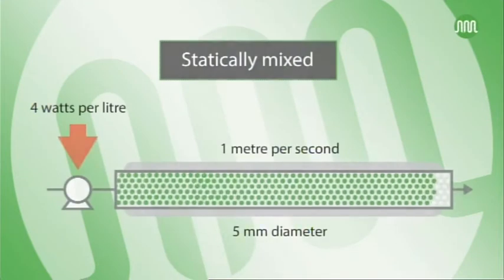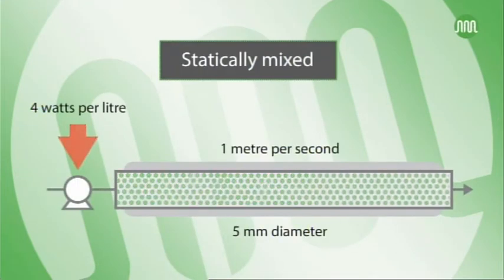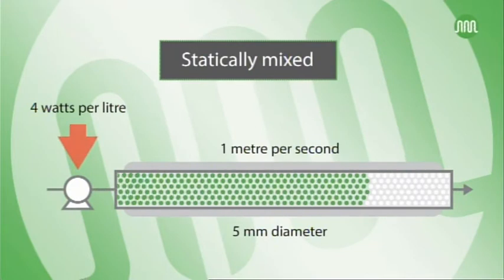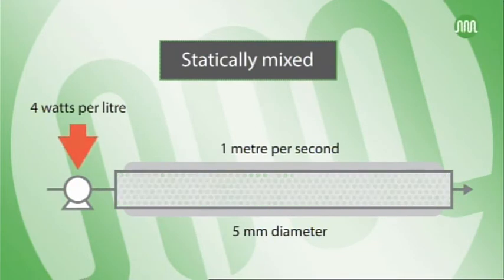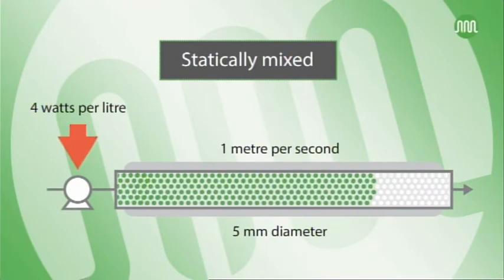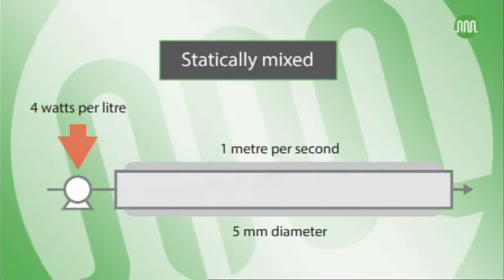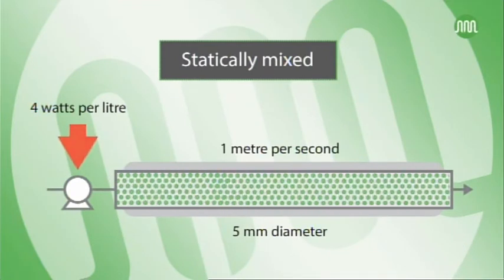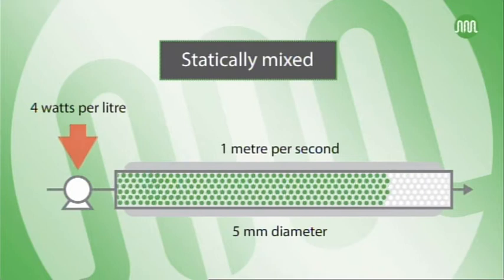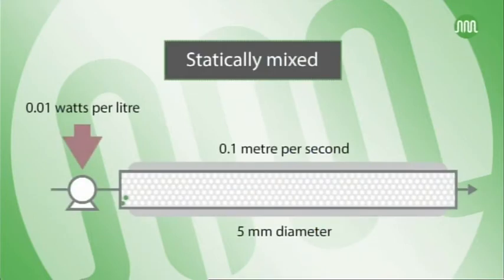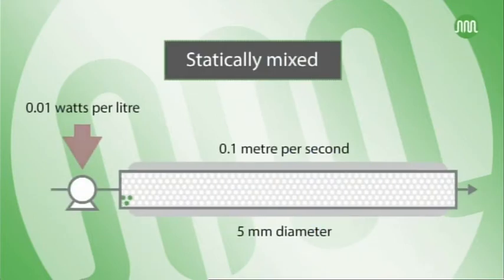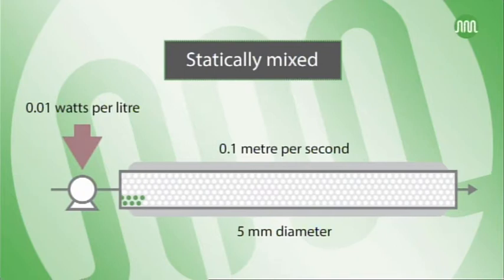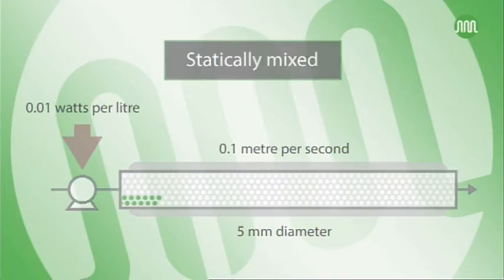For example, if water is pumped through this tube at one metre a second, the energy input by the pump is four watts per litre. This is comparable to a one litre stirred lab vessel with a mixer speed of 300 RPM. At a velocity of 0.1 metres per second, however, the energy input is less than one hundredth of a watt, and as a result, the fluid is virtually stagnant.